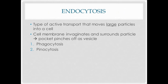Moving into bulk transport — this is still a type of active transport, so it still requires energy. It's moving large particles into the cell. In both phagocytosis and pinocytosis, both types of endocytosis, the cell membrane will invaginate or create a little pocket, surround the particle it's trying to bring into the cell, and the pocket will pinch off as a vesicle. The vesicle will either fuse with a lysosome to break down the particle, or bring it to its appropriate organelle for processing.